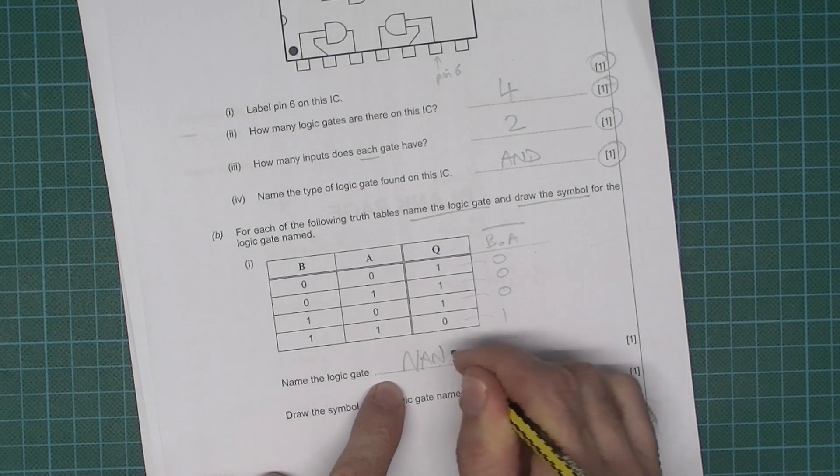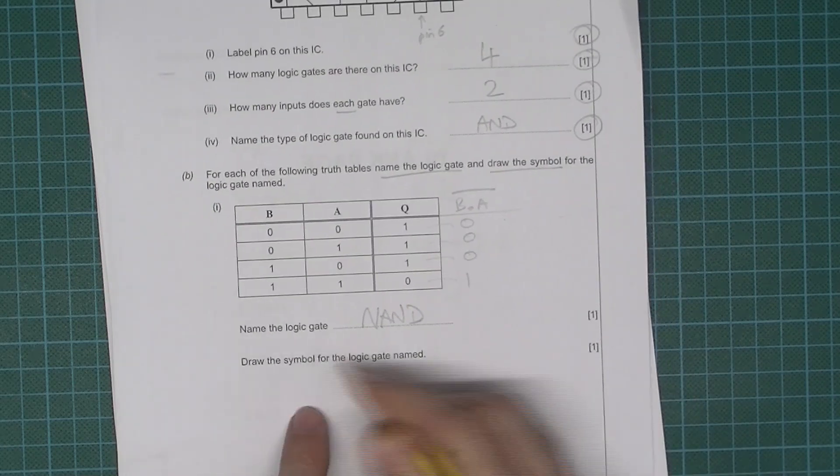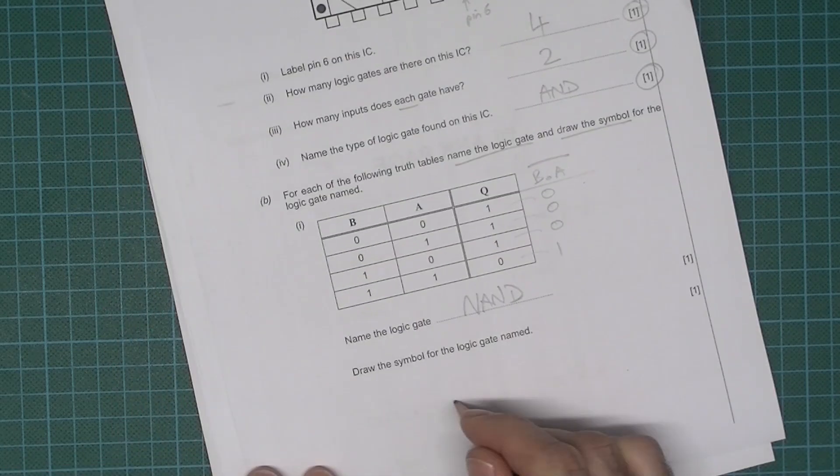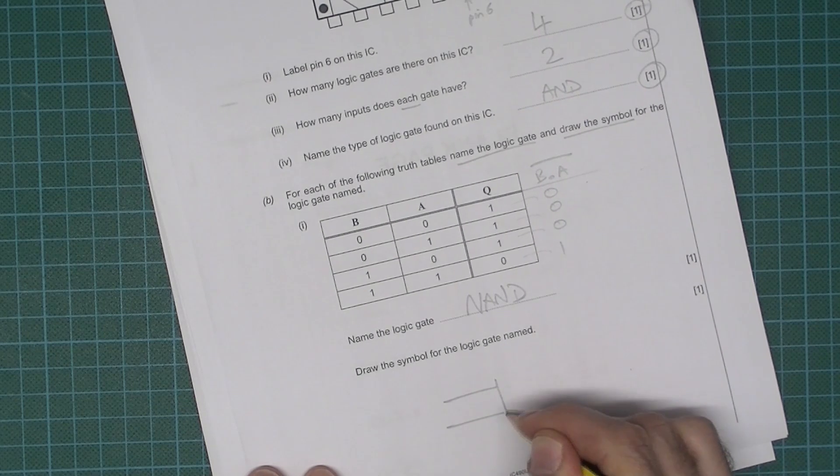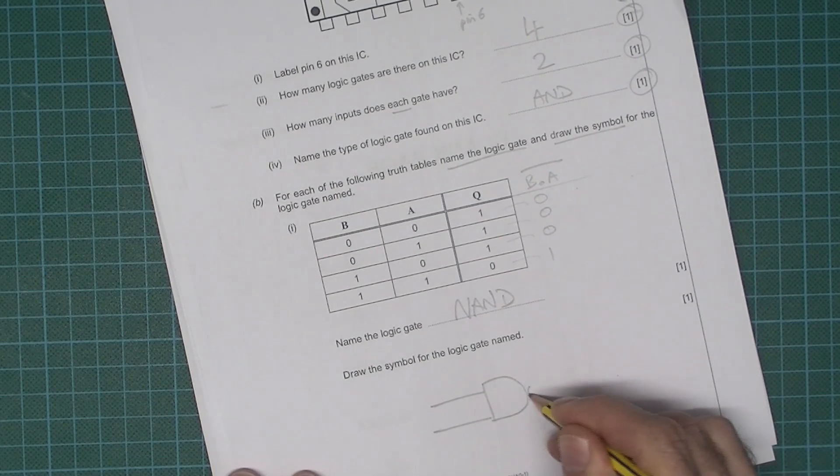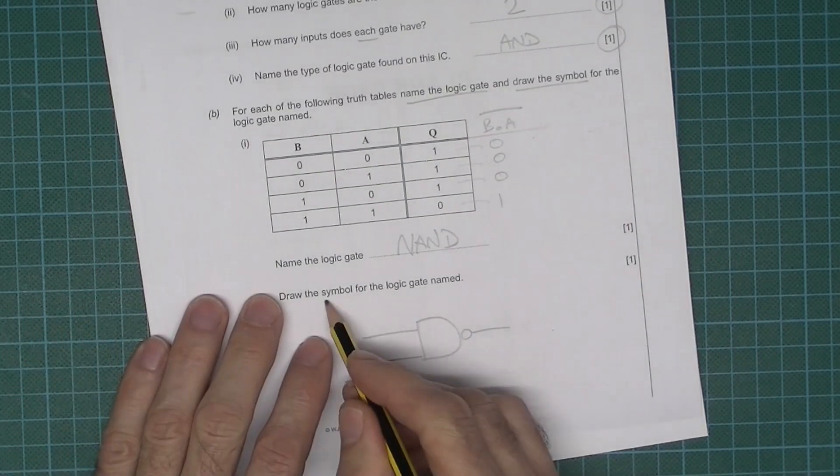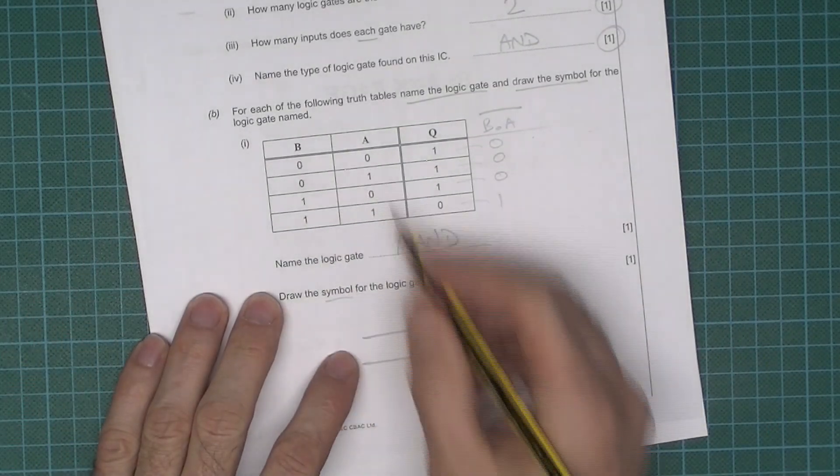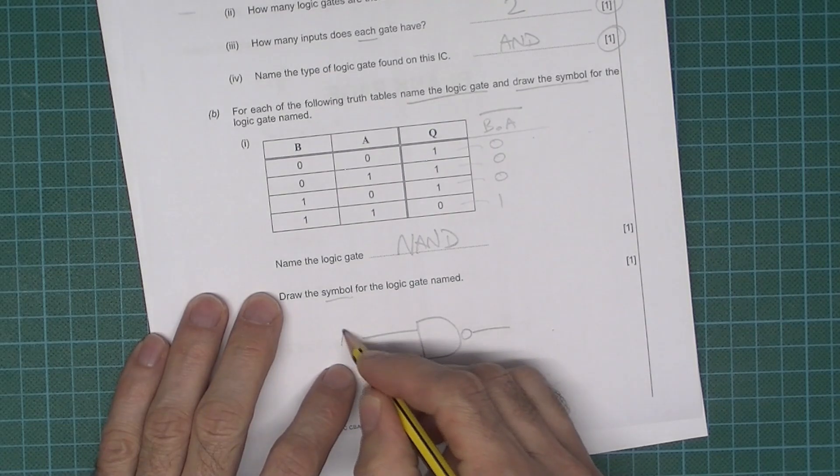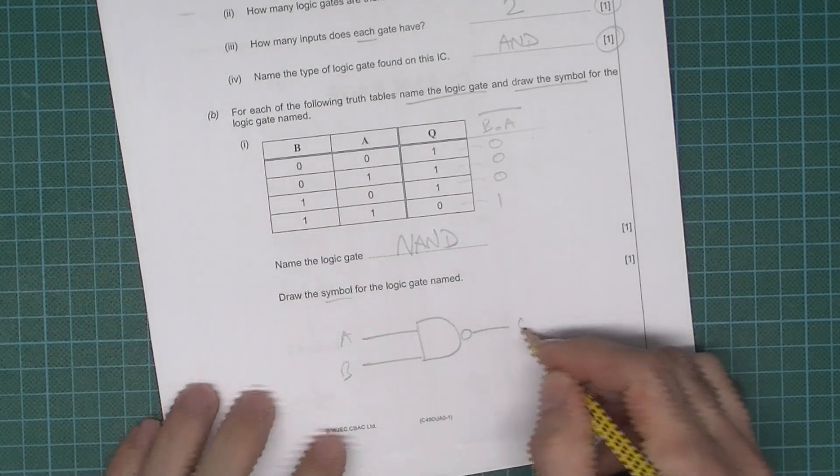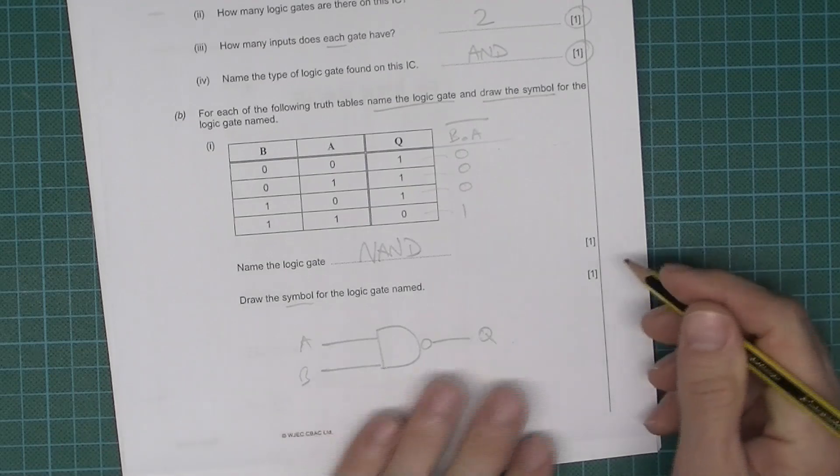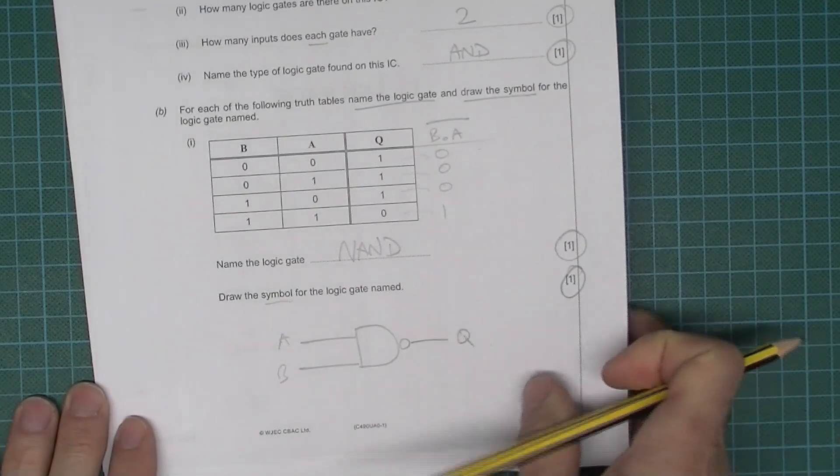NAND, capital letters please. Draw the symbol. Well it looks like an AND gate but then it's inverted, so it has that circle on there. It's only the symbol. If you were to write input names as well like A and B and Q, I don't think that's needed, but you know you can do it if you want. I don't think that'd be a problem.